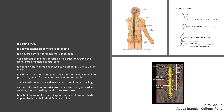Not only the vertebral column, but the meninges also form a covering around the spinal cord, just like the brain. These meninges also provide protection to the spinal cord. There are three meninges present: the outer one is the dura mater, the middle one is the arachnoid, and the innermost is the pia mater.